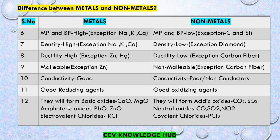Metals form basic oxides — for example, calcium oxide and magnesium oxide. Metals also form amphoteric oxides — for example, lead oxide and zinc oxide. Amphoteric oxides are oxides which react with both acids and bases to form salt and water. Metals also form electrovalent chloride — for example, potassium chloride.